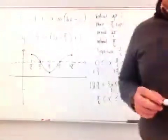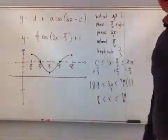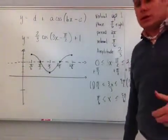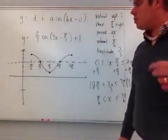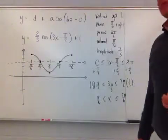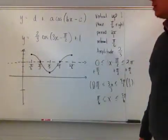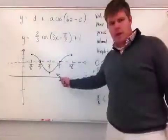And then after my smooth curve and my points are all connected, I now have a final function drawn in here of two thirds cosine times the quantity three x minus pi over two plus one. And there's the graph for it.